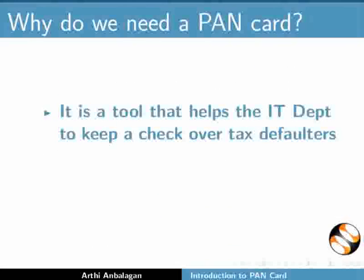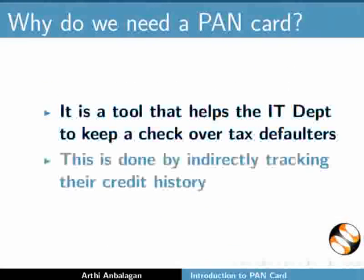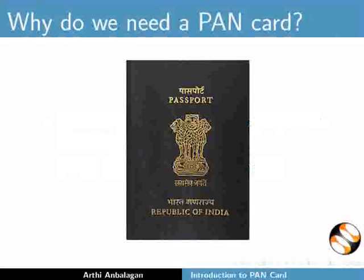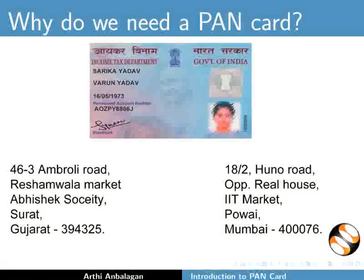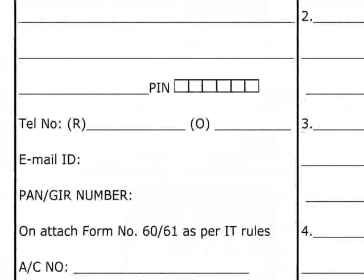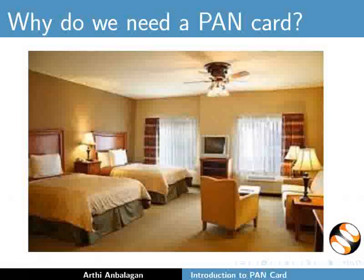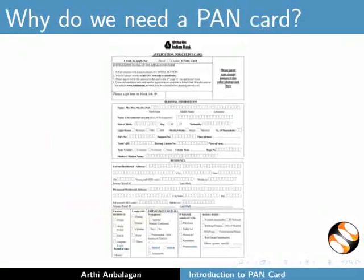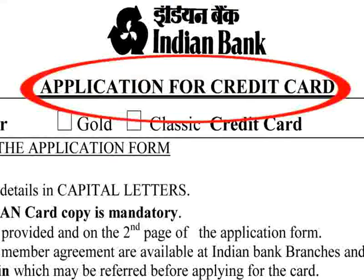Pancard is a tool that helps the IT department to keep a check over tax defaulters by indirectly tracking their credit history. It is used as documentary proof for availing TDS, i.e. tax deductions at source, and as documentary evidence to apply for passport, address changes, and for obtaining other relevant documents. It is also required for fixed deposits of more than Rs 50,000 and for payment of hotel bills and travel expenses exceeding Rs 25,000.